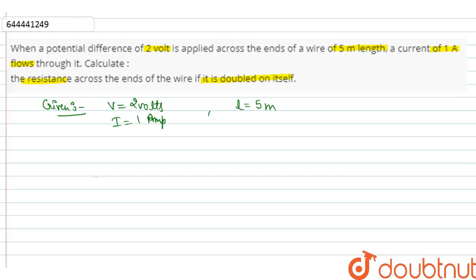According to the relation V equals IR, the resistance R equals V over I, which equals 2 ohm. R equals 2 ohm.